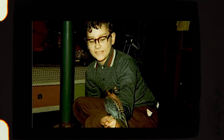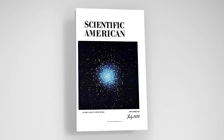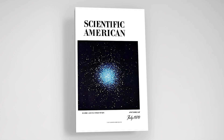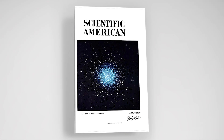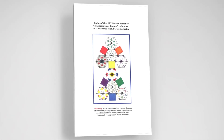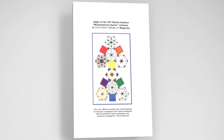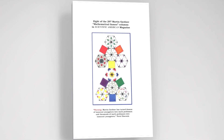When I was a child, we got Scientific American every month and read a lot of the articles in it. But one thing that really fascinated me was this column by Martin Gardner called Mathematical Games that he had every month, and I was really very taken by it.